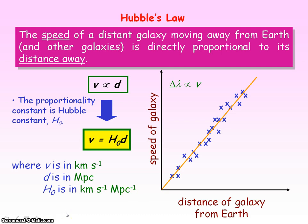Looking at the equivalent SI units: since the SI unit of velocity is metres per second and the SI unit of distance is metres, those cancel, leaving Hubble's constant with SI units of per second.